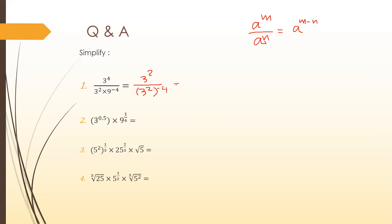This expression becomes 3 squared over 3 to the power negative 8. Why negative 8? Because 2 times negative 4 equals negative 8, according to the power of a power rule. So we simplify to 3 to the power 2 minus negative 8, which equals 3 to the power 10. Therefore, 3 to the power 10 is the simplification of this expression.